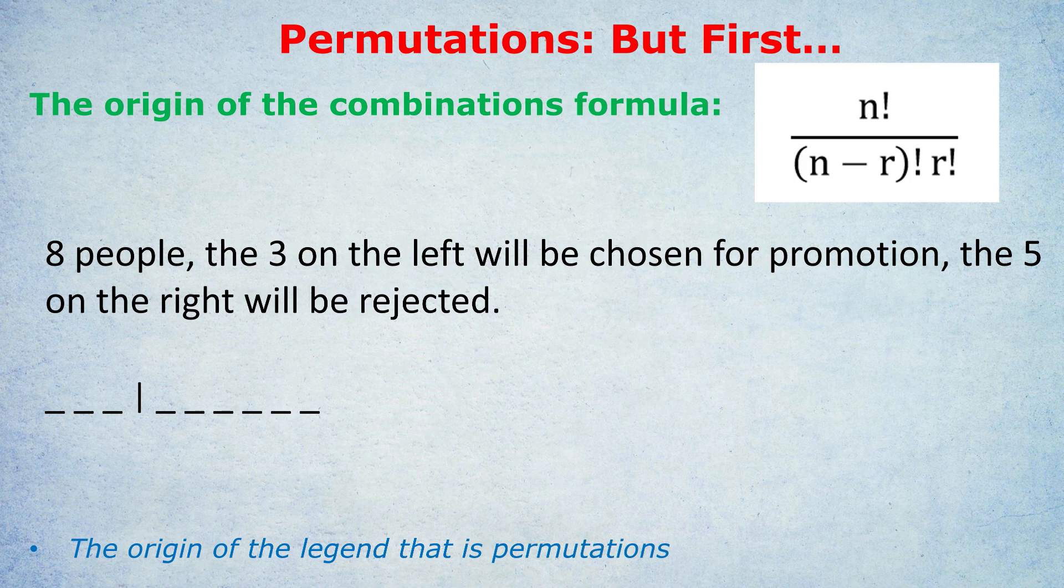The number of ways of randomly rearranging eight people in any queue, if it was just pure random order, would be eight factorial. And the reason it would be eight factorial is that the first position would have eight different possibilities. Anyone could go first. But then for the second position, there are only seven people left that you could choose to go second. Third, there'd be six people, etc.